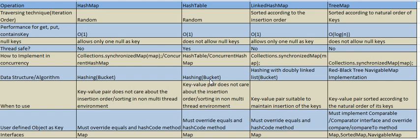The first difference is the iteration order. When you are iterating through HashMap, it displays elements randomly. Similarly, HashTable's iteration order is also random. In the case of LinkedHashMap, the iteration is based on the insertion order of elements. For TreeMap, the iteration is based on the natural ordering of its keys.